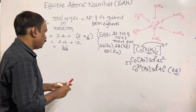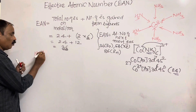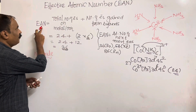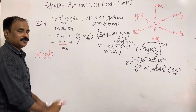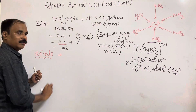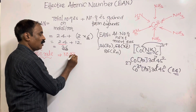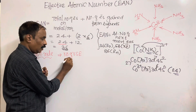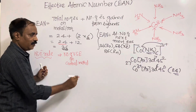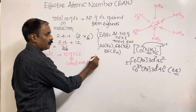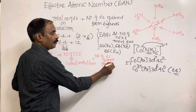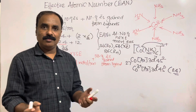An alternative method is the 18-Electron Rule. The formula here is: total number of valence electrons on the central metal or metal ion, plus the number of electrons gained from ligands. If the answer is 18, then the complex is stable.